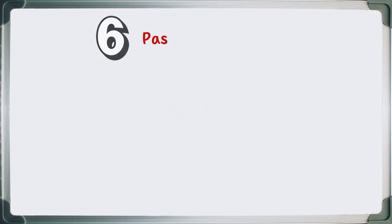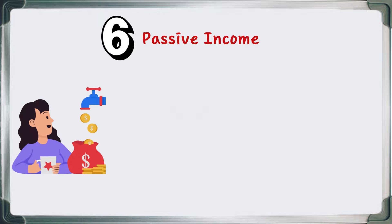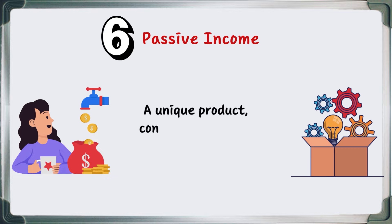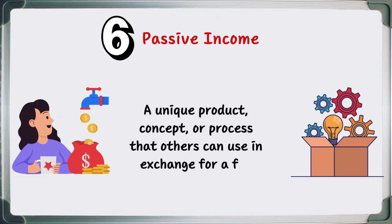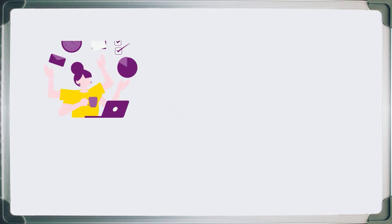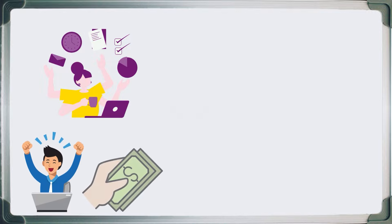Number six: Passive Income. This involves earnings obtained even after the work to generate this type of income has been done. You will need to create a unique product, concept, or process that others can use in exchange for a fee. By allowing others to use your creations, they do the hard work and pay you a small percentage of their earnings.